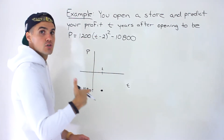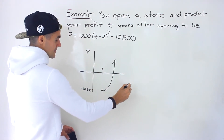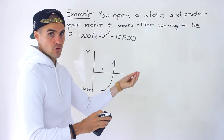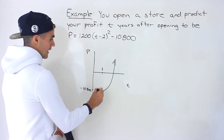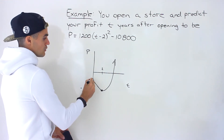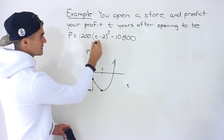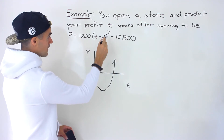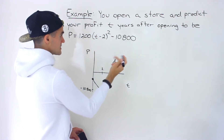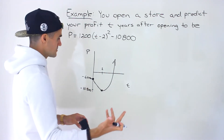Notice that the A value is positive, so we know this is going to be a quadratic opening up. Because we're dealing with a word problem, T can't be negative, since T represents the number of years after the opening. So the quadratic for the word problem starts at T equals 0, when the store opens. If you plug in 0 for T, you get 1,200 times (negative 2) squared minus 10,800, which gives negative 6,000.